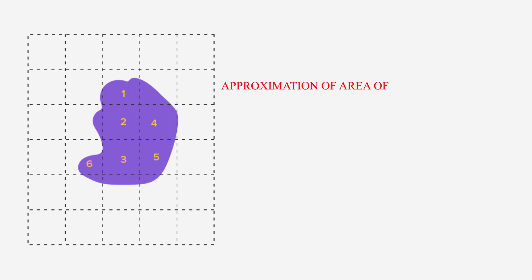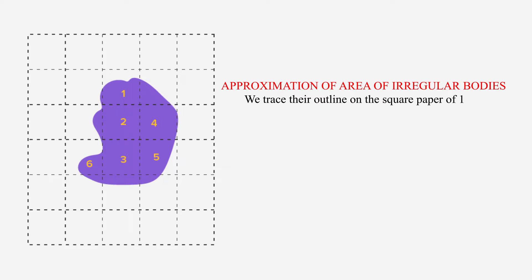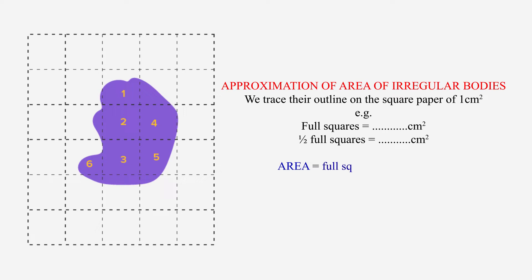Approximation of area of irregular bodies. We trace their outline on square paper of 1 centimeter squared. The number of full squares and half-full squares are counted separately, and the area equals the number of full squares plus half the number of half-full squares.